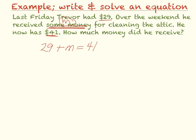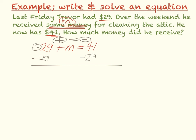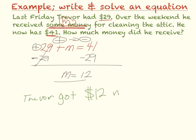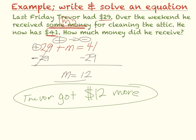Now I need to solve for M. So I have $29 plus M equals $41. To get rid of the $29, I need to do the opposite of plus, which is subtract. So I'm going to subtract $29 from both sides. And when I do that, I see that M equals $41 minus $29, which is $12. So Trevor got $12 more. And that's your final answer.